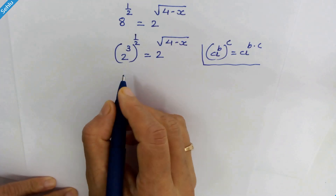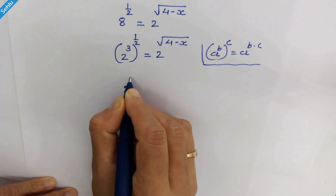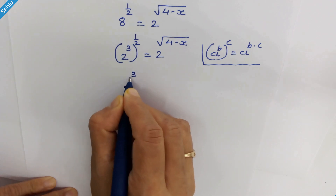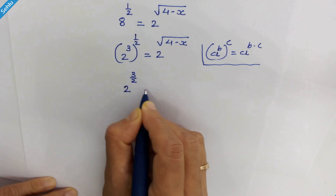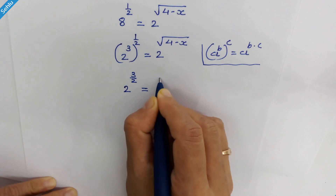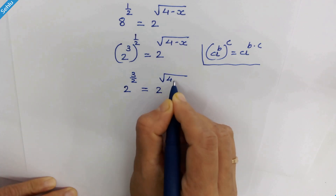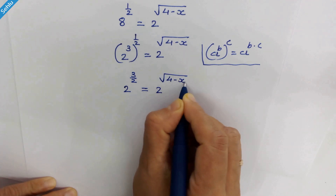So in the next step we have 2 raised to 3 upon 2 is equal to 2 raised to square root of (4 minus x).